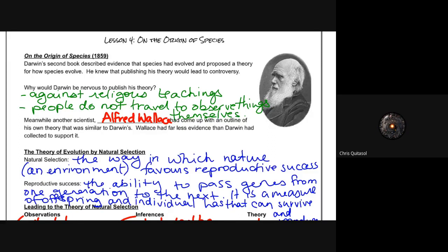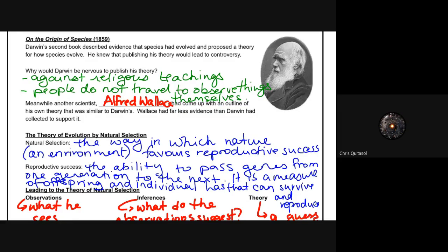The question I asked with regards to the notes is why would Darwin be nervous to publish this theory? The main concept was that religious teachings went against it, and a lot of people were unable to travel and look at his observations. Another scientist at that time, Alfred Wallace, had come up with a similar idea without some of the evidence that Darwin had, and that's kind of why we know Darwin today as the father of the theory of evolution.